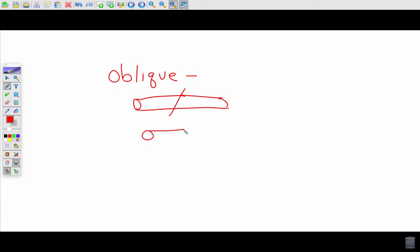We'll get a piece that looks like this and a piece that looked like that. So that's an oblique plane.